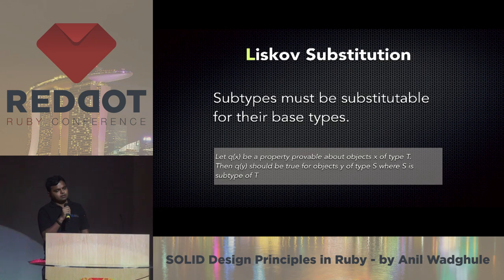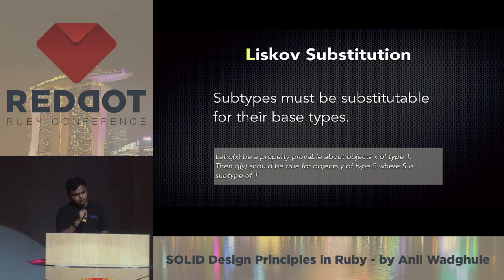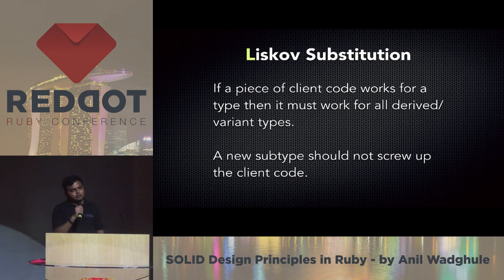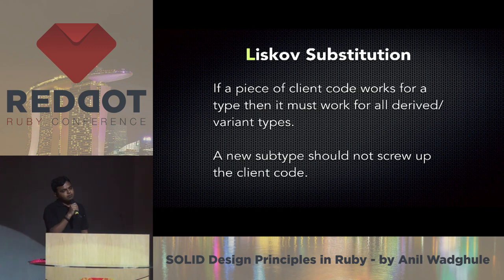This was written by Barbara Liskov. The rule states: let q(x) be a property provable about objects x of type T. Then q(y) should be true for objects y of type S, where S is a subtype of T. Basically, subclasses should not modify the behavior of their parent class. If a piece of client code works for a type, it must work for all derived or variant types.